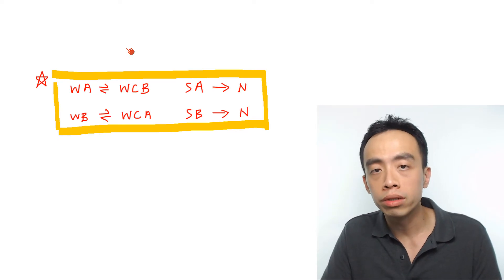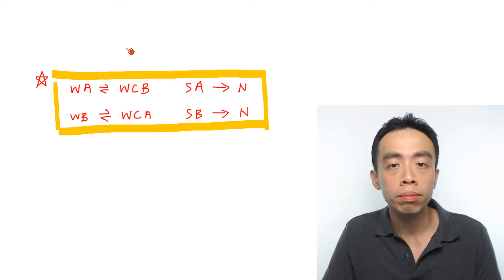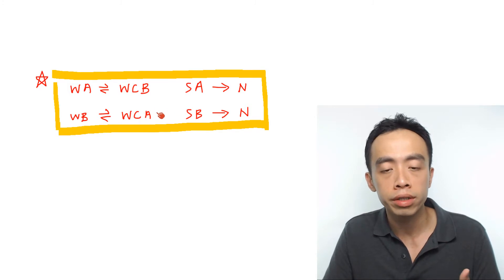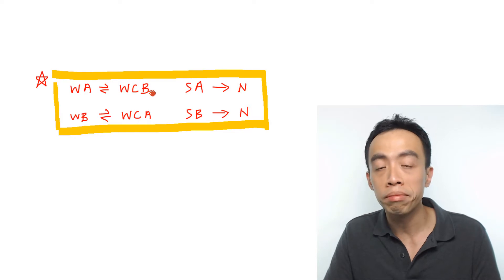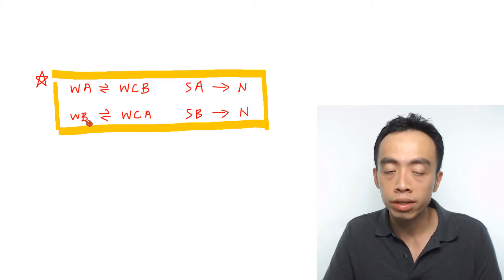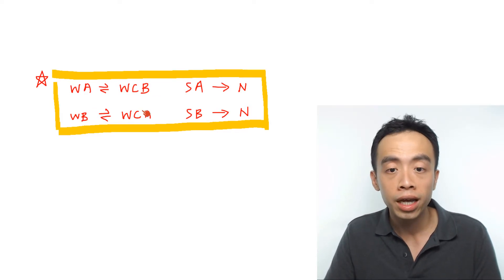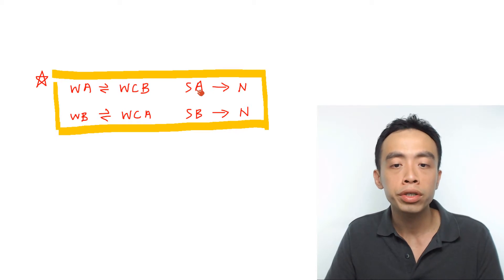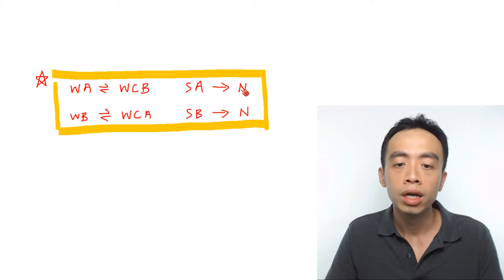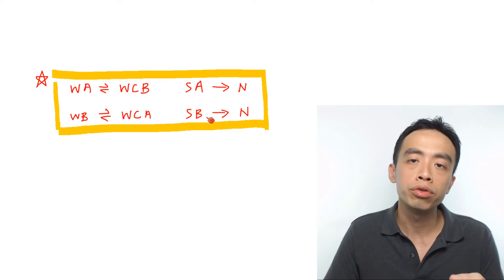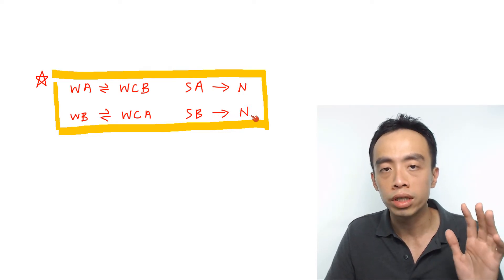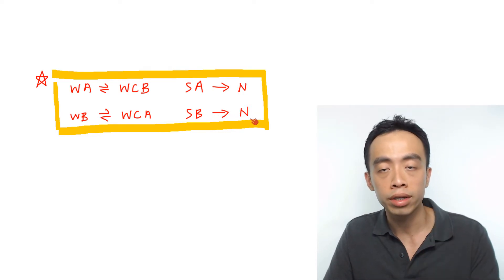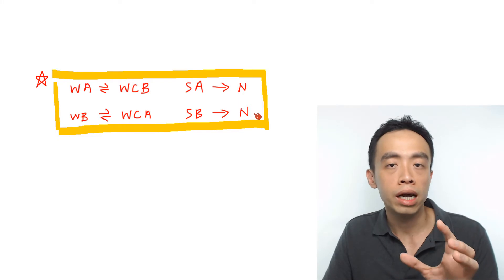Before we jump into the examples, there are some fundamental ideas to discuss. Remember the dissociation of weak acids and strong acids. A weak acid would dissociate in solution to give me a weak conjugate base. A weak base would dissociate in solution to give me a weak conjugate acid. A strong acid would dissociate in solution to give me a counter-ion form which is neutral. A strong base would dissociate in solution to give me a counter-ion which is neutral. We need this concept, which is very fundamental in ionic equilibrium, to figure out salt hydrolysis.